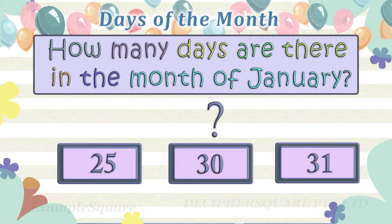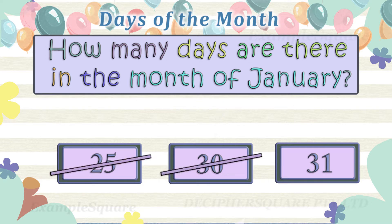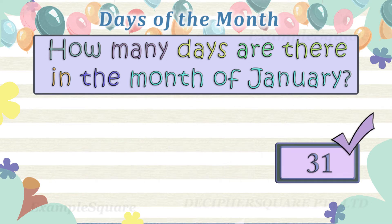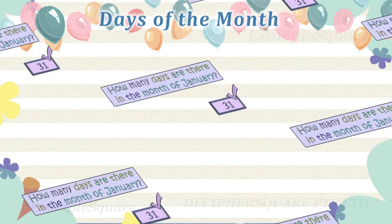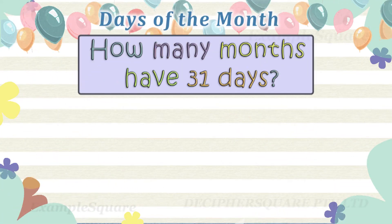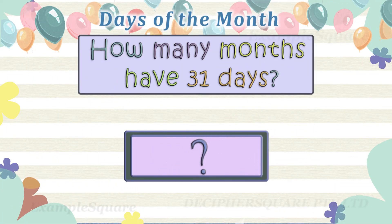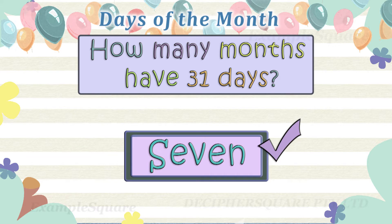How many days are there in the month of January? There are 31 days in January. How many months have 31 days? There are seven months with 31 days.